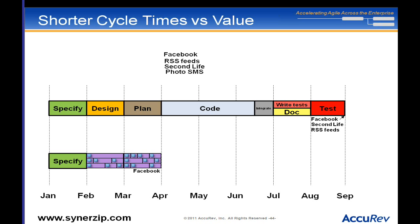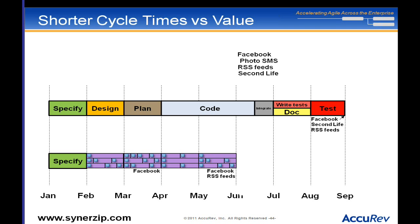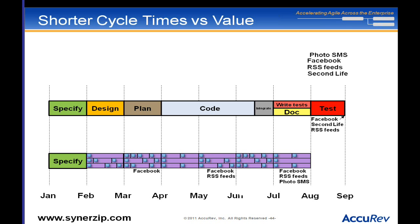Then the world changes: rather than Second Life, the market is telling me to focus on RSS feeds. So I do a little for that, do another iteration, now I have RSS feeds. The world changes again: now photo/SMS integration is the thing I should focus on, and I can do that. While from a development perspective that might seem a little inefficient, I'm getting gains on the economic side — economic efficiency.